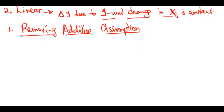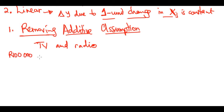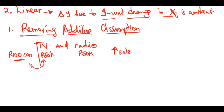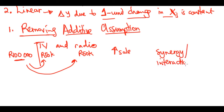We didn't care how much we were spending on radio; we just said whatever you spent on radio, if I increase my TV by this much, this is how sales will change. But that may not be true in real life. So what we want to show is: if we have 100,000 to spend, splitting it 50k to TV and 50k to radio can lead to a much larger increase in sales than putting all 100,000 into TV or radio alone.